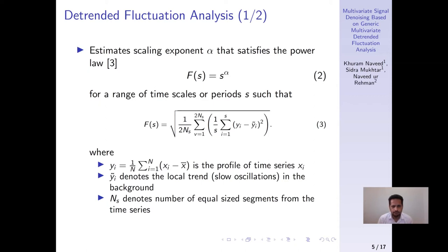The profile of the time series of the input time series xi is obtained based on the cumulative sum of the time series, and the local trend or slow oscillations in the background are obtained by dividing the time series in equal sized segments and then fitting the quadratic curve on each of those segments.